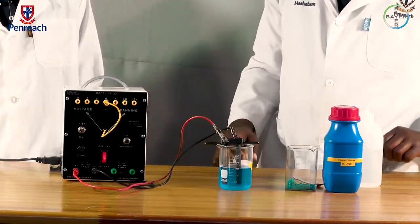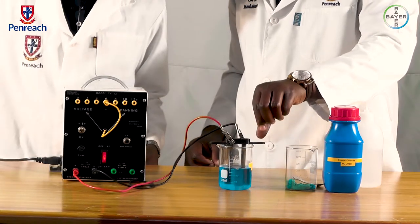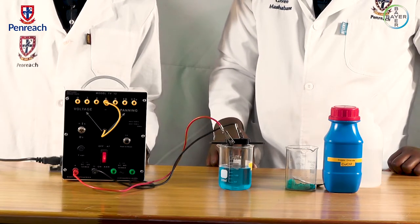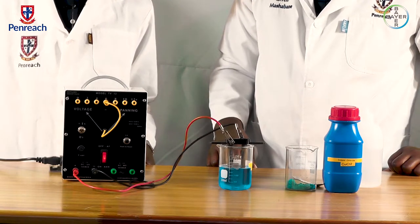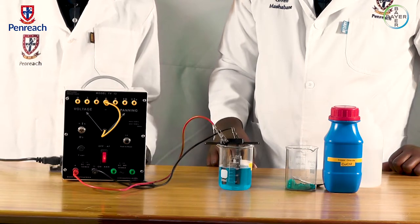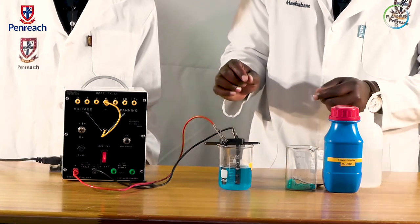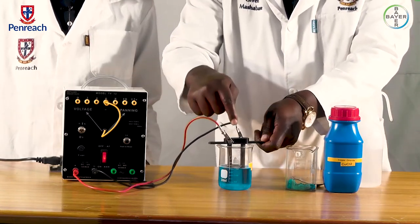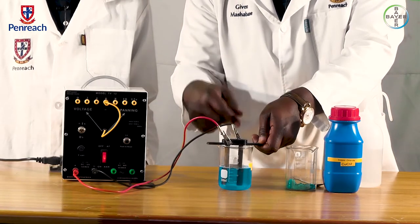What are we expecting to see, Andres? Well, we are expecting to see bubbles forming on one electrode and copper metal forming on another electrode. Since copper chloride is made of copper and chlorine, and we know that copper is a metal and chlorine is a gas. Very important, Andres. We have to make sure that the electrodes do not touch each other to avoid short circuits.